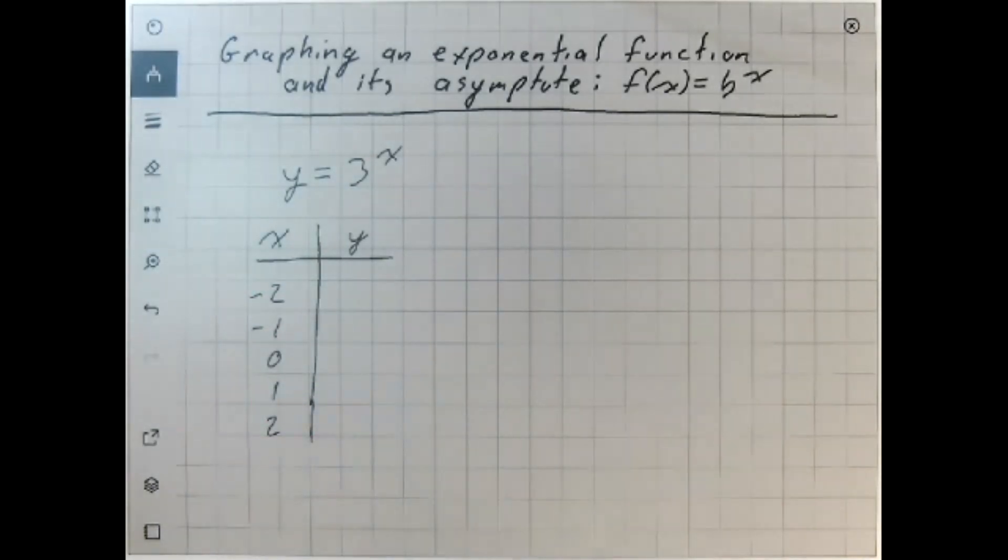If I plug in that x is negative 2, negative 1, 0, positive 1, or positive 2, I can evaluate this function at each of those points.